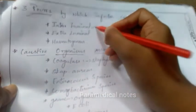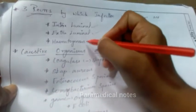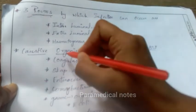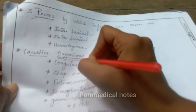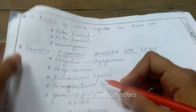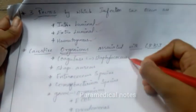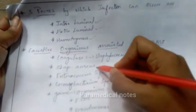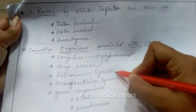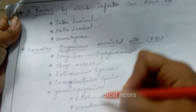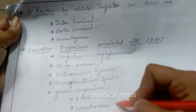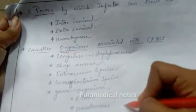The next point is the three routes by which infection can occur via a catheter. The three routes are: intraluminal, extraluminal, and hematogenous. We should write all three routes clearly.